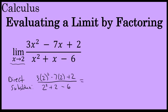But here, 2 squared is 4 times 3 is 12, minus 14 plus 2 is 0 in the numerator, and 2 squared is 4 plus 2 is 6 minus 6 is 0 in the denominator — 0 over 0 is undefined. However, this indeterminate form does imply that the limit exists, even though direct substitution has told me nothing about what the actual limit is.